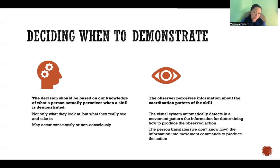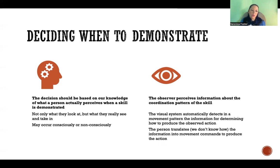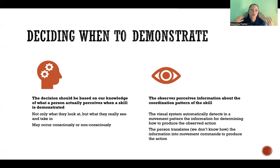What they're perceiving could be conscious or non-conscious. They may be aware and able to articulate what they're seeing, or it may be more subconscious and they're taking in that information without necessarily knowing it. The observer perceives information about the coordination pattern of the skill. When watching someone demonstrate, the visual system takes in the movement pattern and translates that information into movement commands so they can reproduce that action. We don't yet know exactly how the brain does that, but we are visually taking in the information and transferring it into a motor command so that we can produce that action as similarly as possible.